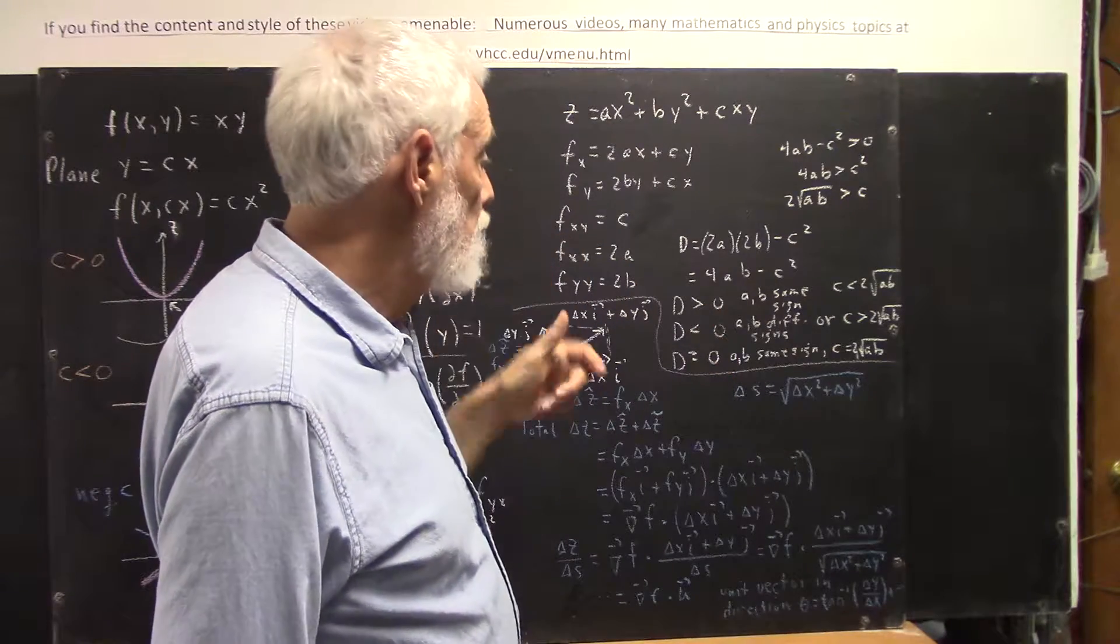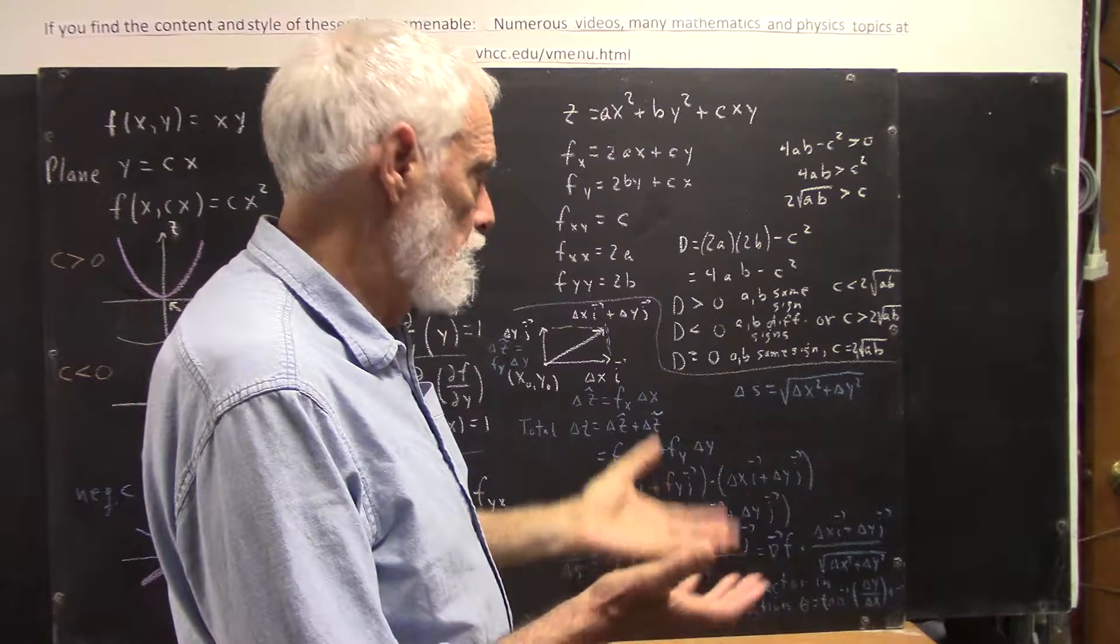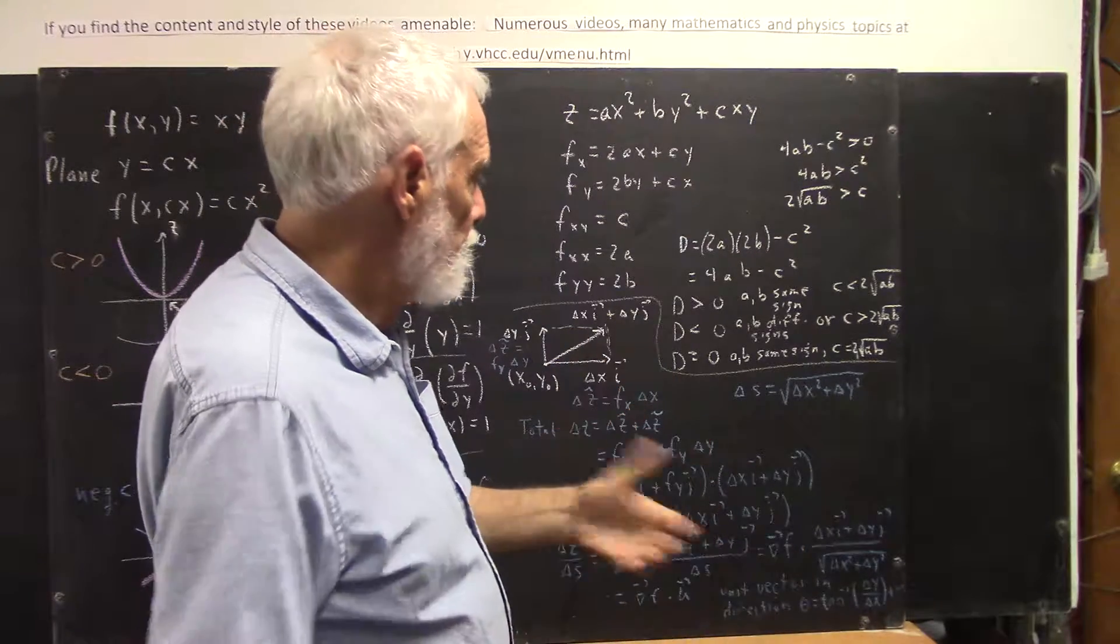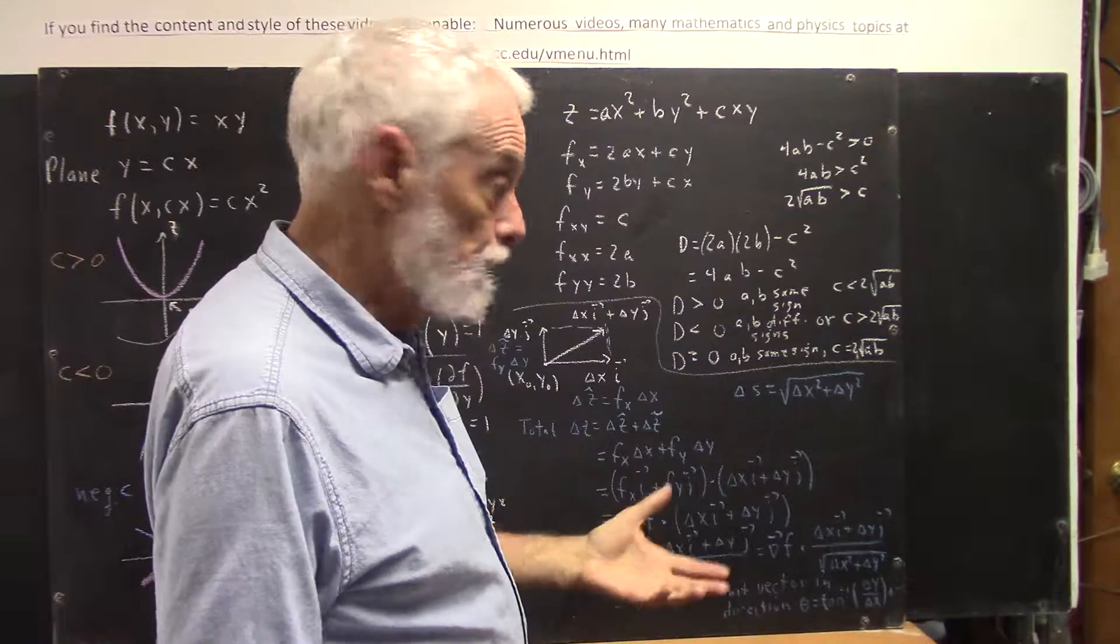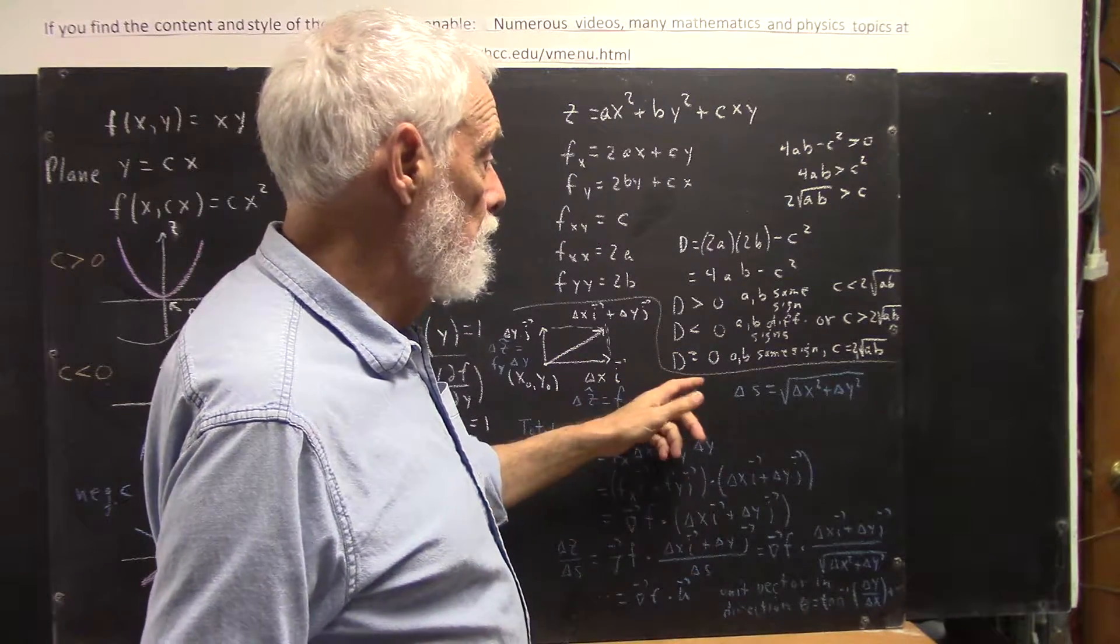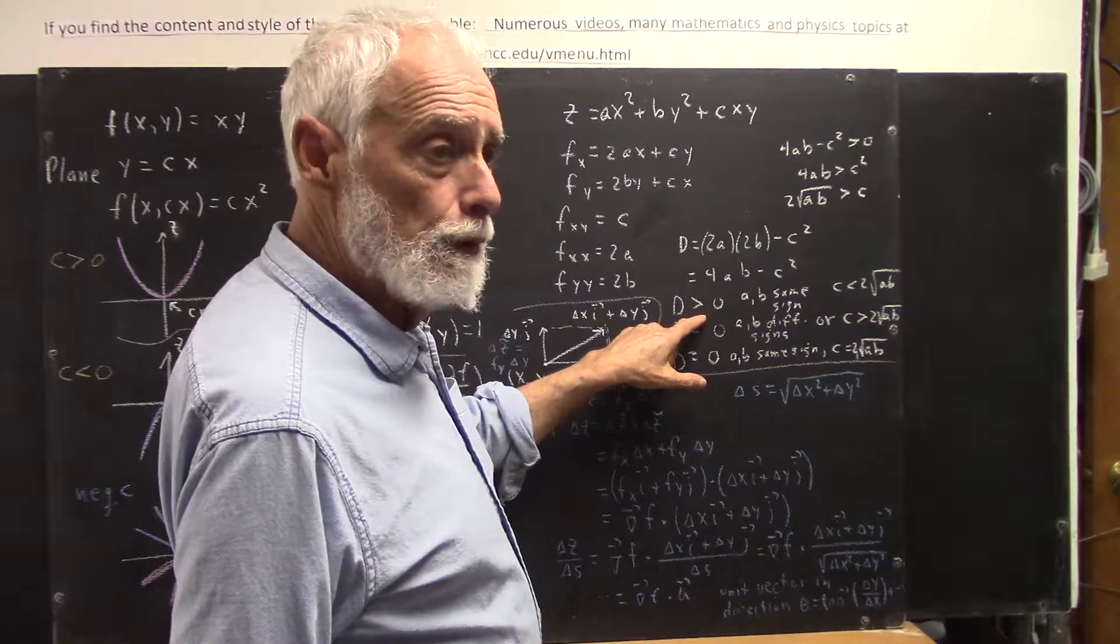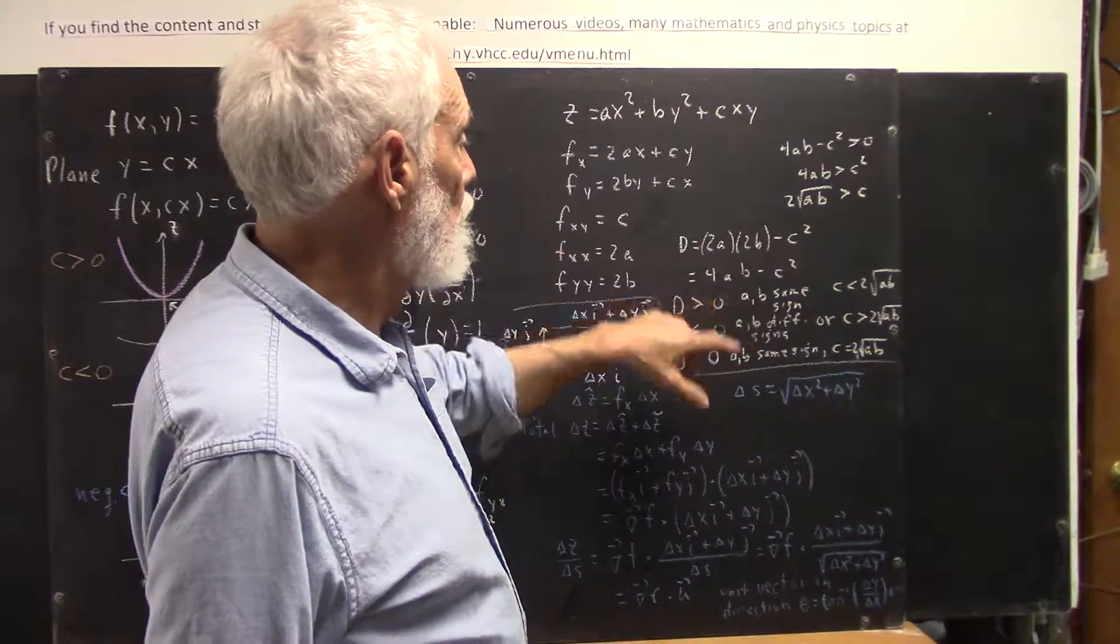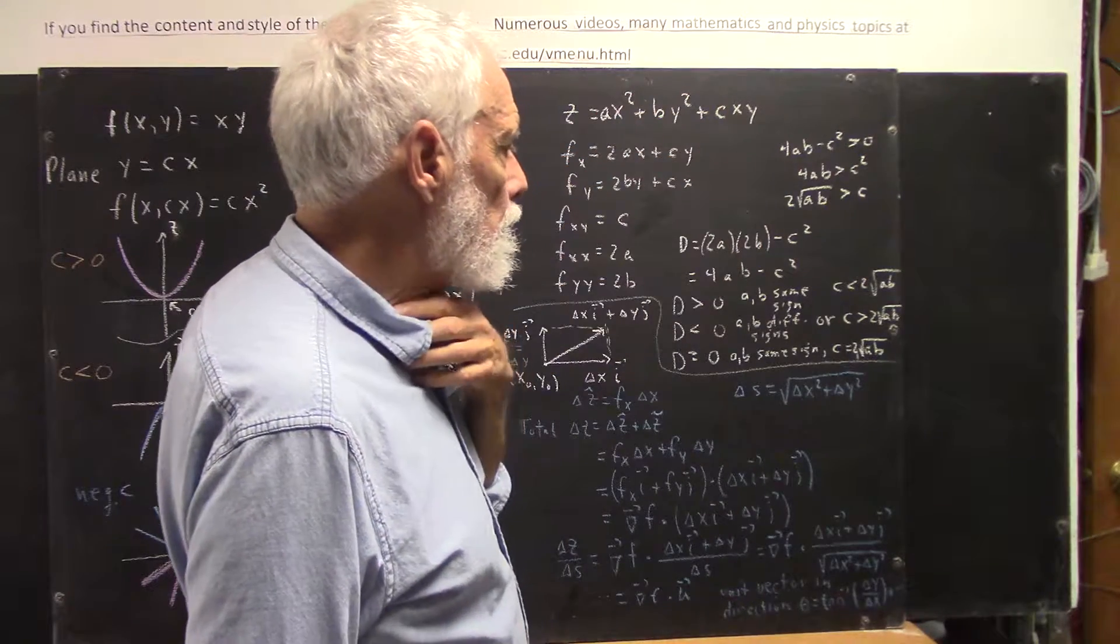you're going to have a minimum, a minimum or a maximum, depending on the signs of a and b. If d is less than 0, you have a saddle point. If d equals 0, you don't know. So what is it that makes d greater than 0 for this function? How would the values of a, b, and c determine whether d is greater than 0?